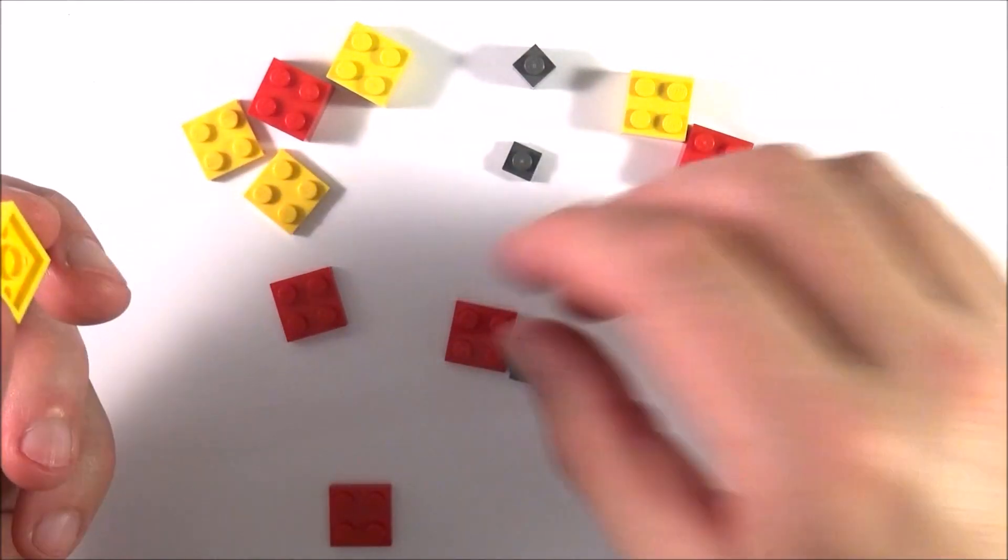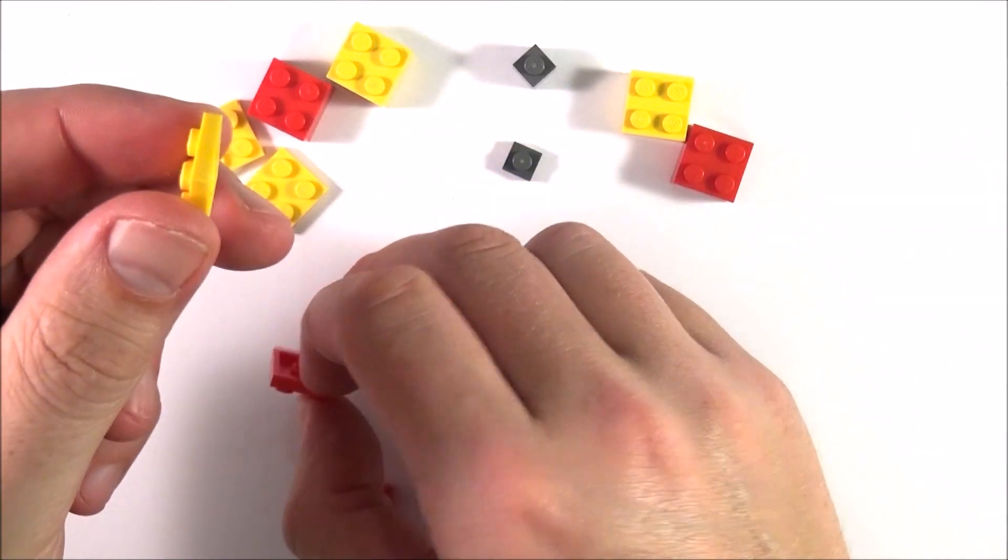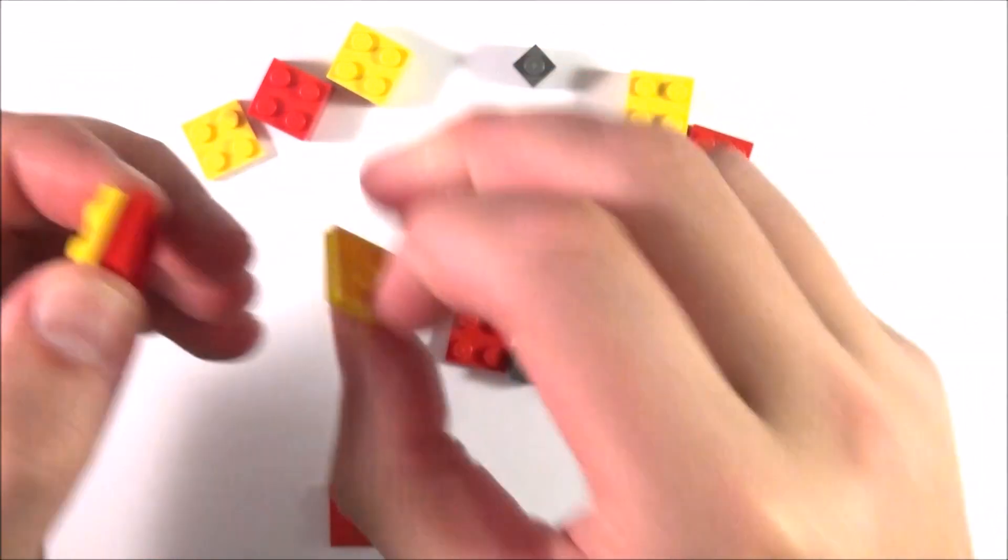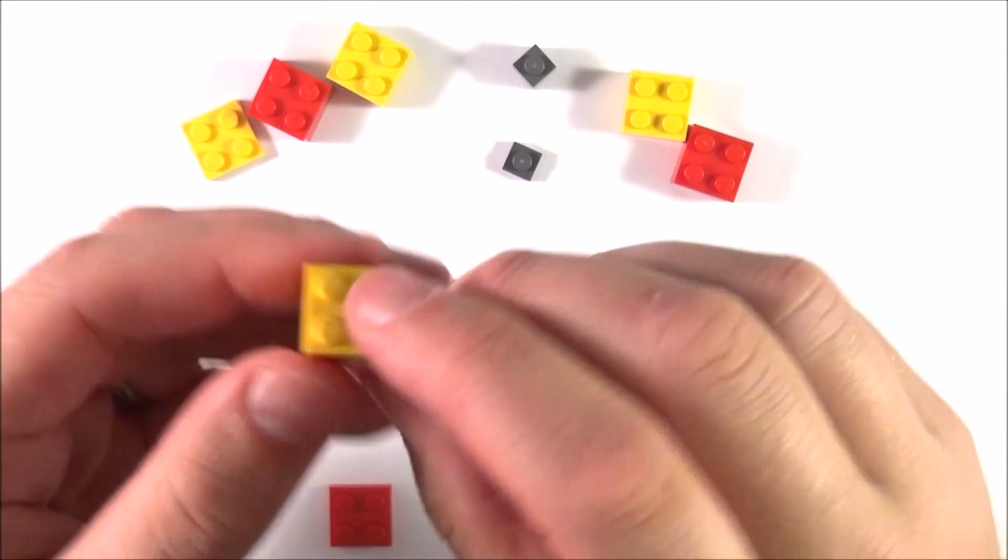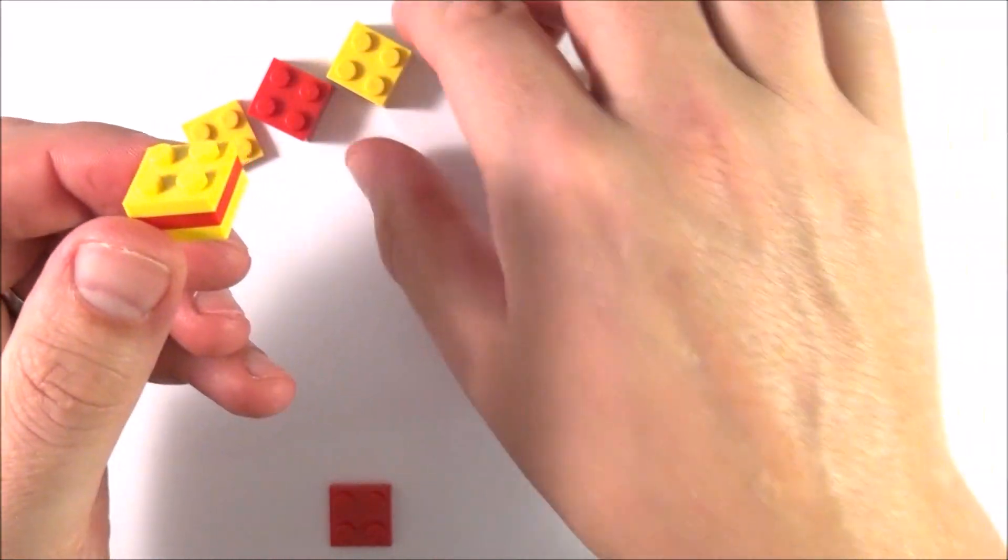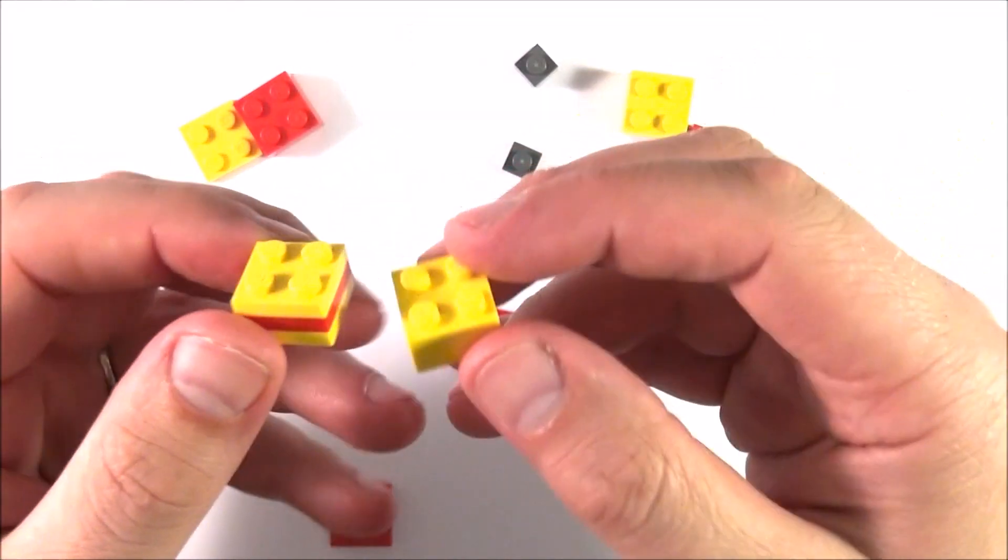Remember that three quarks make a baryon. So if you have an up quark, a down quark, and an up quark, that makes a proton. That's why this way of using Lego is quite a nice way of building up the whole universe.